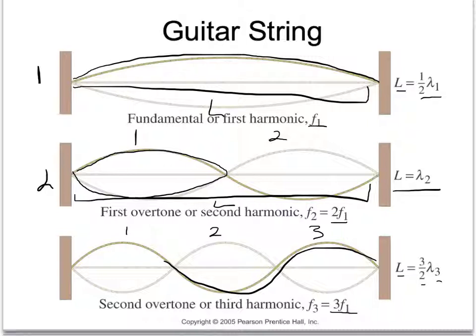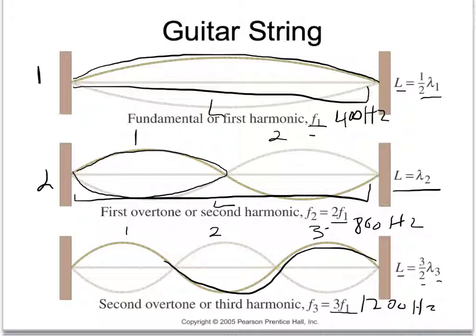So if the frequency of the first one was 400 Hz, this one would be 800 Hz, and this one would be 1,200 Hz. If you know the fundamental harmonic, you can multiply the other harmonics by their whole number: the second harmonic is two times the fundamental, and the third harmonic is three times the fundamental. Musicians sometimes call these the first and second overtones — your first overtone is your second harmonic, and your second overtone is your third harmonic.